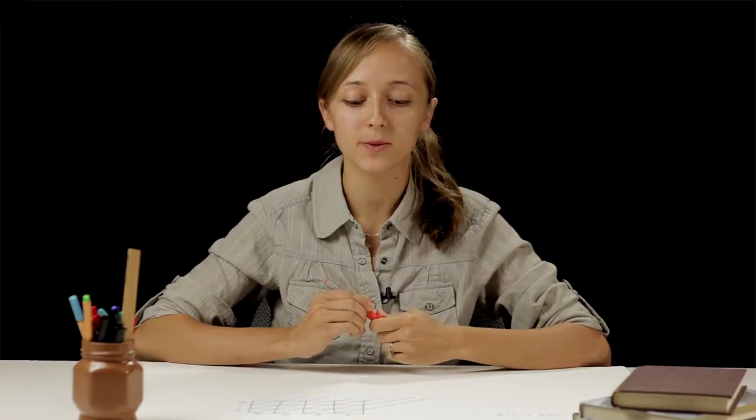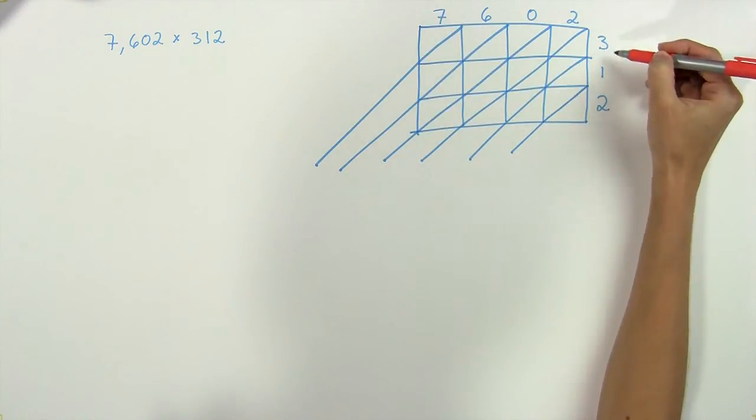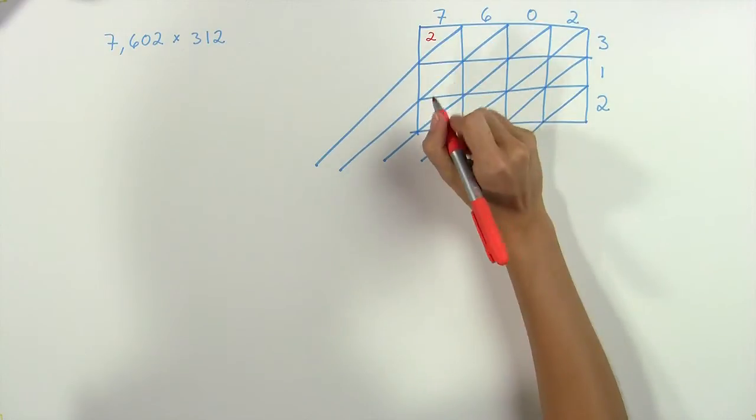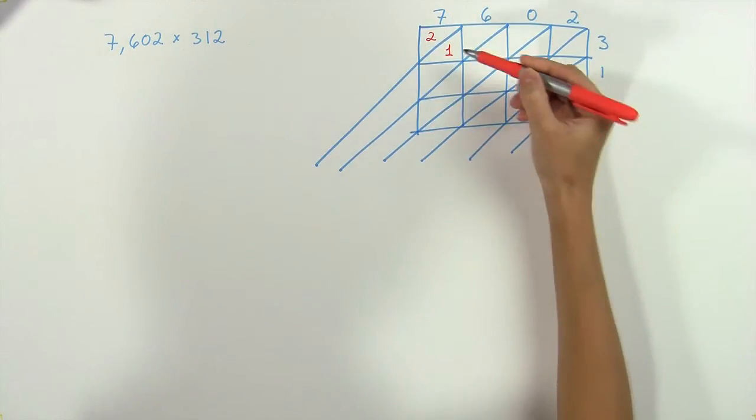Now we're ready to begin multiplying. We multiply each of the numbers and write their product in the square, like this. Seven times three is twenty-one, so we go ahead and put twenty-one in this first square. We put the two in the top half and the one in the lower half of the square.